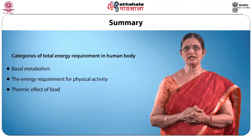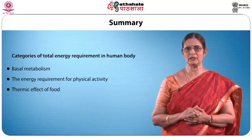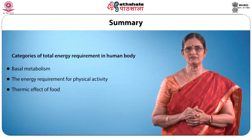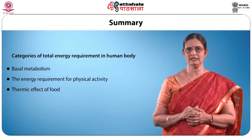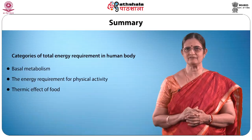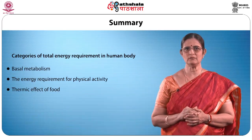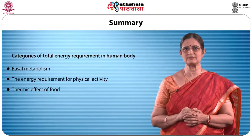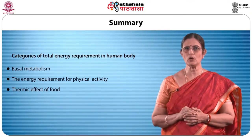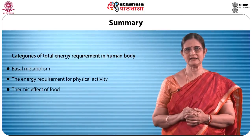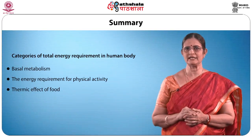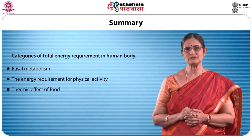In summary, the human body's total energy requirement has three major categories: basal metabolism, energy requirement for physical activity, and thermic effect of food. Basal metabolism covers the largest expenditure of energy, followed by physical activity, which is followed by the thermic effect of food. Thank you students.